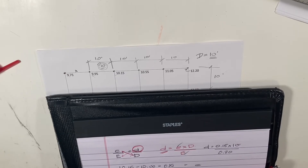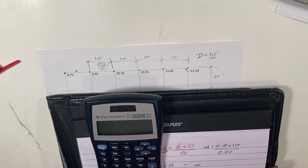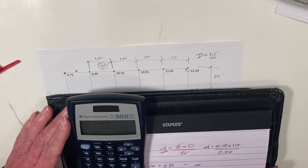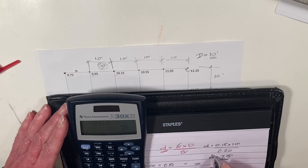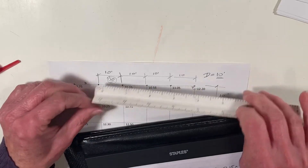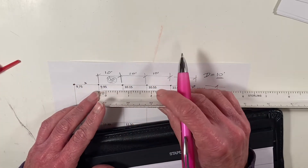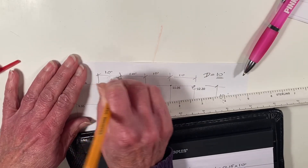Using the calculator: 0.15 times 10 equals 1.5, and now we divide that by 0.2, and our little d equals 7.5 feet. That is the distance we have to measure with our scale from the spot elevation we used for little e, which was the 10.15 elevation. So we go to our drawing and measure seven and a half feet from where the 10.15 is, make a dot - and that is exactly where elevation 10 is. You can put '10' and circle it.